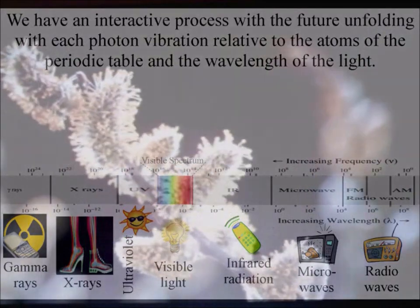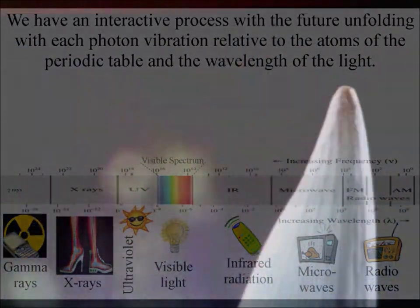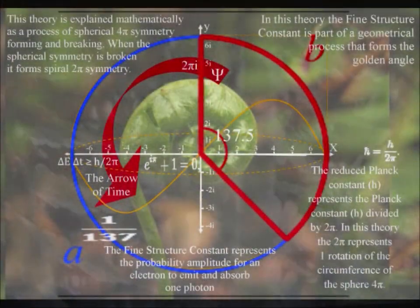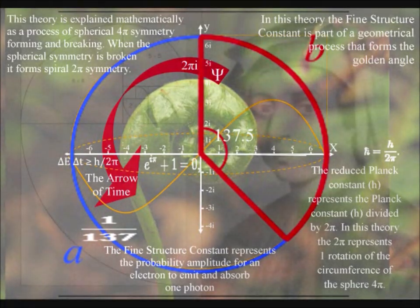In this theory, the fine structure constant, as part of a geometrical process, forms the golden angle and with it the Fibonacci spiral that we see almost everywhere in nature.